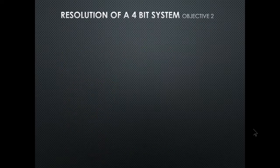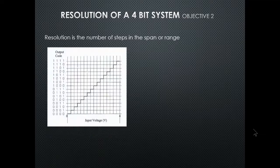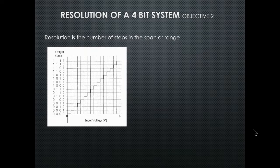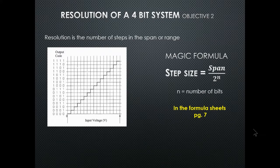Now objective two — resolution of a four-bit system. Resolution is the number of steps in the span or range. The more steps, the higher the resolution. For a 0 to 4 volt range, the binary inputs go from 0000 up to 15, giving 16 steps. The magic formula: step size equals span divided by 2ⁿ, where n is the number of bits. This formula is on page 7 of the formula sheet.